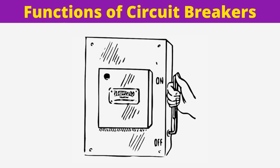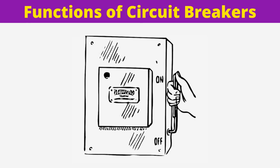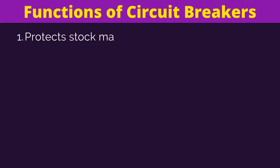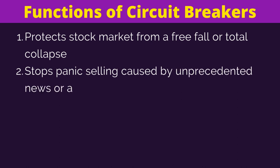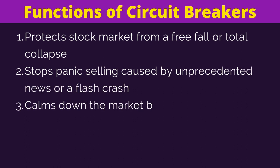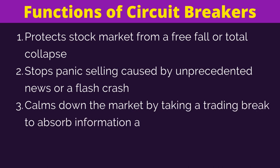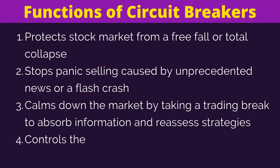Let us now understand the functions of circuit breakers in markets. First, it protects the market from a free fall or total collapse. Second, it stops panic selling caused by unprecedented news or a flash crash. Third, it calms down the market by taking a trading break to absorb information and reassess strategies. Fourth, it controls abnormal trading volumes and curbs volatility.